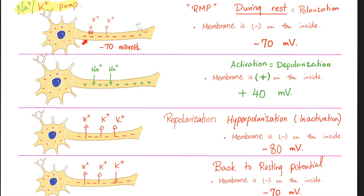Action potential summary: during rest the inside is negative because potassium is leaving. During depolarization, positive ions come in and we become more positive. To return to resting, potassium leaves again. If the inside overshoots to -80 mV instead of -70 mV, potassium enters via inward rectifier potassium channels, rectifying the overshoot back to -70 mV.